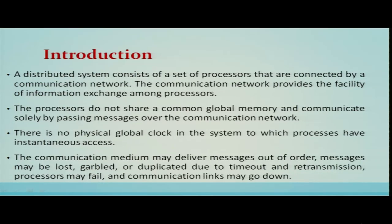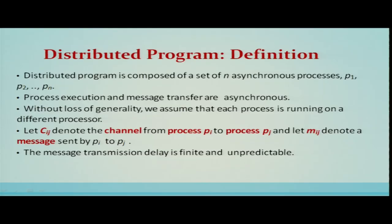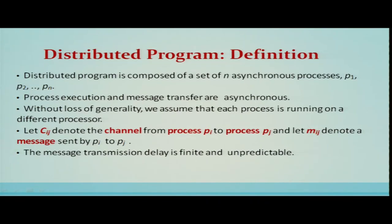Processors may fail and communication links may go down. These are the characteristics of distributed systems in which we discuss how to write applications and distributed programs. A distributed program is composed of a set of n asynchronous processes P1 to Pn. Process execution and message transfers are asynchronous. Without loss of generality, we assume each process runs on a different processor, so the terms process and processor signify the same thing here.